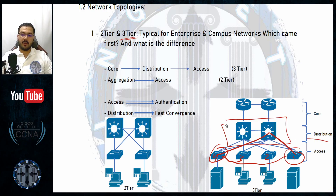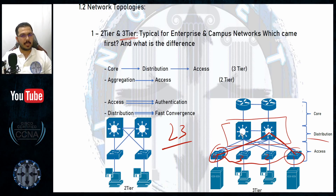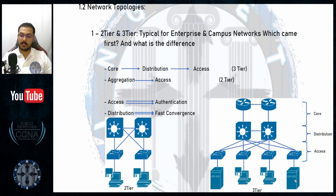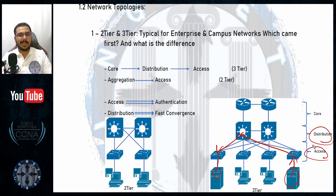In the distribution layer you find layer 3 devices — either routers or multi-layer switches, but typically multi-layer switches. Why? Because a multi-layer switch can have a port operating as a routing port to communicate with a router, and another port operating as a switch port to communicate directly with a switch. It is a hybrid device — one half for routing, another half for switching. So an endpoint asks its switch, which connects via the distribution layer to the other switch, which delivers to the destination.